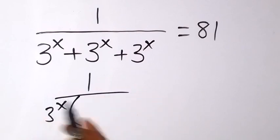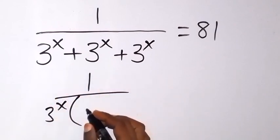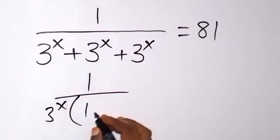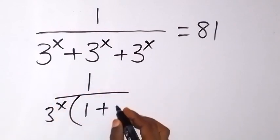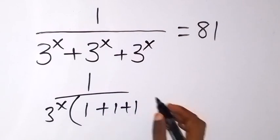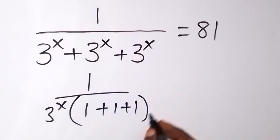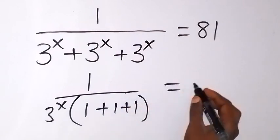We bring 3 raised to power x out. Then when we divide by 3 raised to power x, we have 1, then plus 1 plus 1.